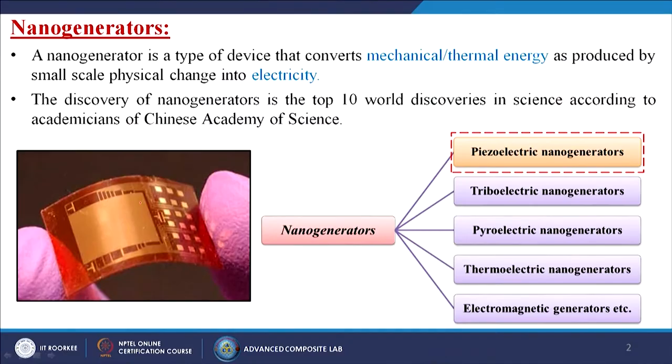The output for all cases remains the same — that is electricity — while inputs are variable: heat, pressure, magnetic force, or friction. Nanogenerators have been divided into several parts: one is called piezoelectric, another triboelectric, then pyroelectric, thermoelectric, and electromagnetic.